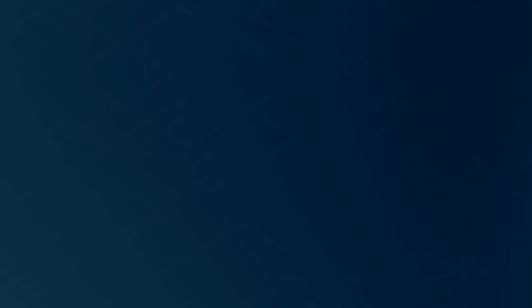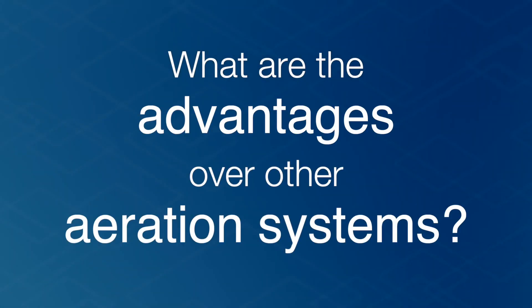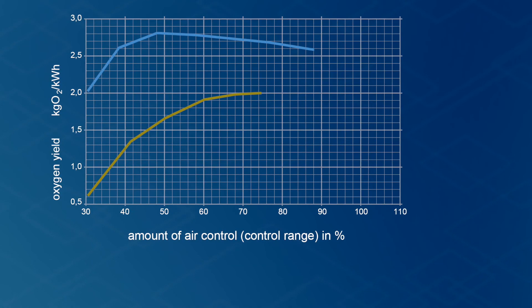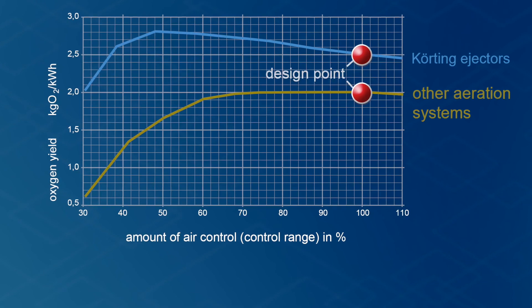The intensive flow towards the tank floor helps to avoid deposits and the oxygen supply is easy to control. When the airflow is lower, the ejector reduces discharge pressure on the roots blower and therefore its power consumption. Oxygen efficiency rises at the same time, resulting in a constantly high level of oxygen transfer across the whole control range. This is a major benefit compared to other two-phase nozzles.